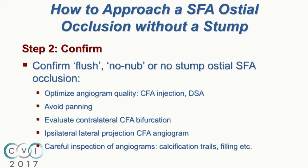Before you call something without a stump, please confirm. There are multiple simple strategies to reassure you that this is truly a no-nub or flush occlusion of the osteal SFA. First, optimize your angiogram — injection is better done in the common femoral artery rather than an aortogram. Orthogonal and ipsilateral angulation is very important, and lateral projection angiograms can be very useful. Also, pay attention to calcification trails and late filling of the SFA, which can happen at multiple levels.